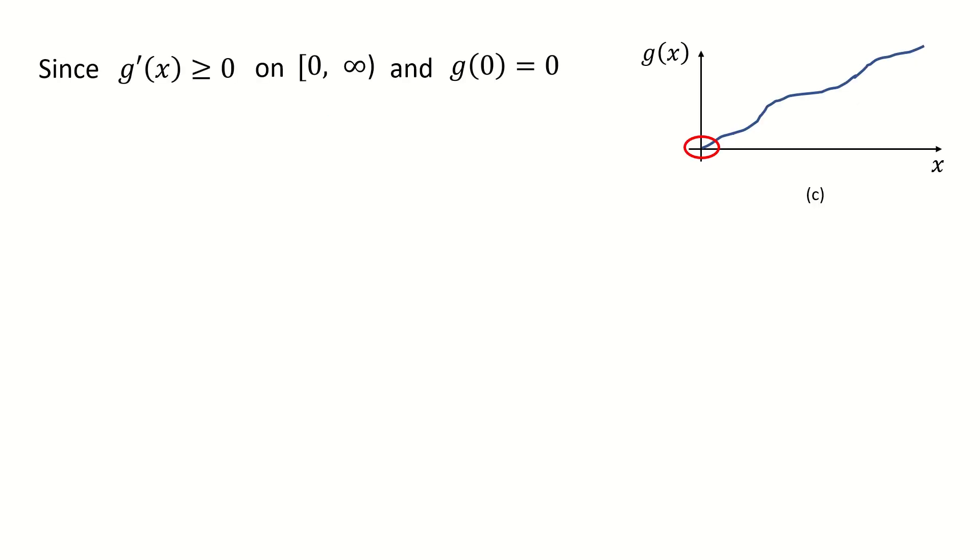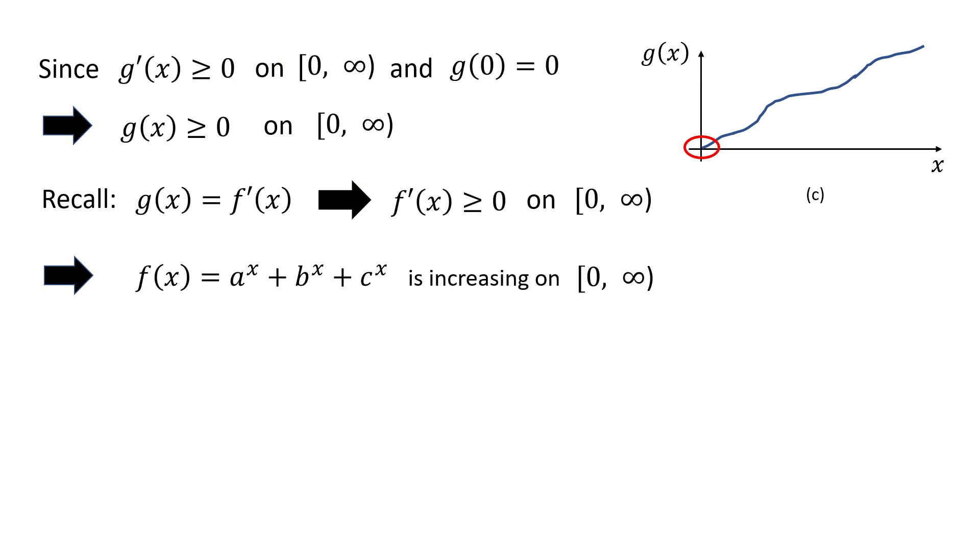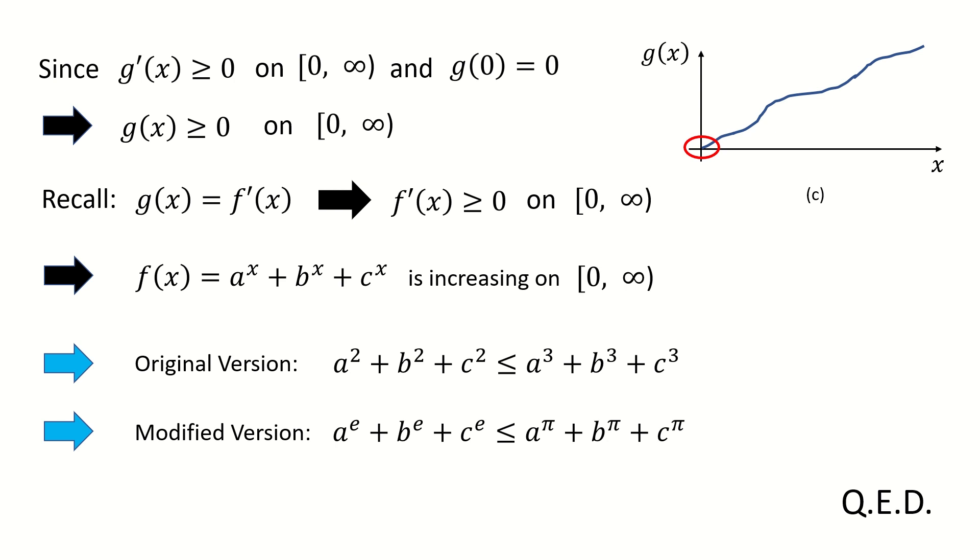Now let's complete this proof. Since we have proved the derivative of g(x) is non-negative, and g(0) is 0, as illustrated in the figure C, then we immediately got g(x) is non-negative. And recall that we define g(x) is the derivative of f(x). So that means the derivative of f(x) is increasing on this interval. Therefore, we got these two versions proved at one time.